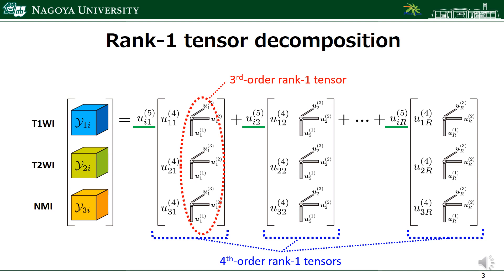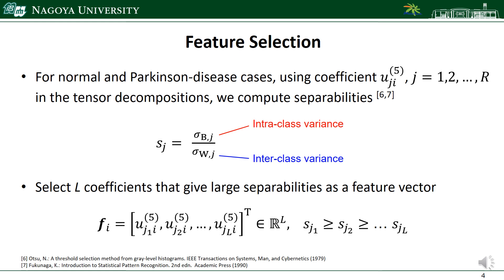For the feature extraction, we use a feature selection procedure. For normal and Parkinson's disease cases, we compute the separabilities between them. We then select a small number of coefficients that give large separabilities as a feature vector.